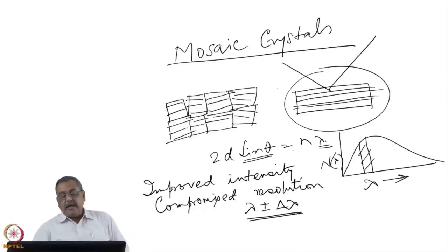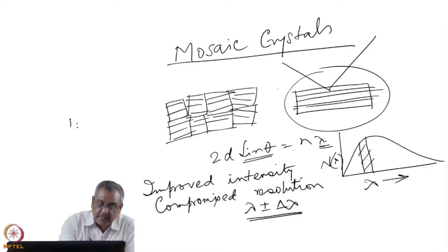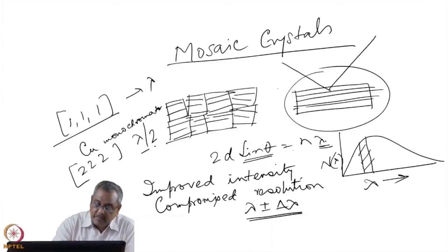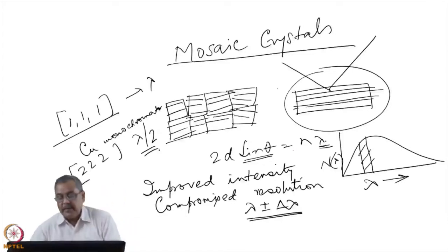I can also mention another phenomenon that is second order contamination. We write 2d sin θ equal to nλ. For example, suppose I am taking 111 reflection from a copper monochromator. Now for almost the same angle, the 222 reflection from lambda by 2, if this gives me lambda, neutrons with lambda/2 will contaminate the reflected beam.